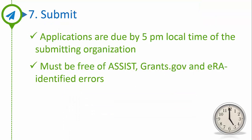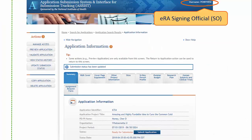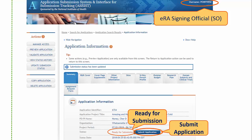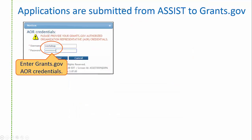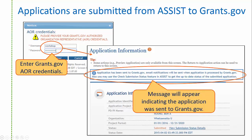Step 7 is submitting your application. Your error-free application must be submitted by 5 p.m. local time to be considered on time. Please submit early to allow time to address any unforeseen issues — and by early, I mean submitting days, not hours or minutes before the deadline. To submit, you must be signed in to ASSIST with a signing official eRA Commons account, and your application must be in a Ready for Submission status. If that criteria is met, the Submit button is active. Applications are submitted from ASSIST to Grants.gov. After hitting Submit, you're prompted for Grants.gov Authorized Organization Representative, or AOR, credentials. AORs have signature authority in Grants.gov, like signing officials do in eRA Commons — just two systems with different names for that authority. The AOR credentials are passed on to Grants.gov, and if everything checks out, your application is sent, a message appears at the top of the screen, and the application status changes to Submitted.